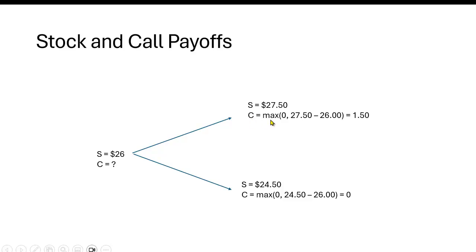The call is going to be equal to the maximum of zero, or the stock price minus the strike price. So, in this case, it's $1.50. Remember, you can buy at the strike price, and then in the absence of transactions cost, you sell at what the market price is, $27.50, and you make a $1.50 profit. Over here, the price falls to $24.50. And again, the value of the call in this state of the world is zero, or $24.50 minus $26, which is negative. So it takes on a value of zero.